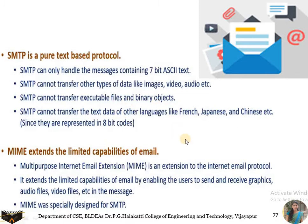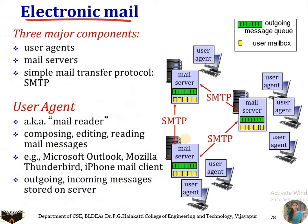Now let's look at a high-level view of the internet mail system. It has three major components: the first is the user agent, the second is mail servers, and the third is the SMTP protocol — that is, Simple Mail Transfer Protocol.